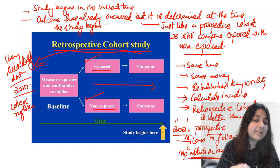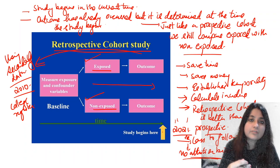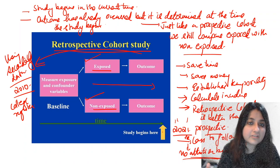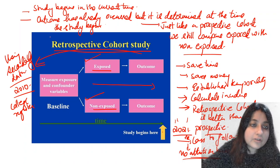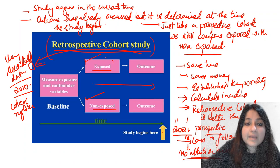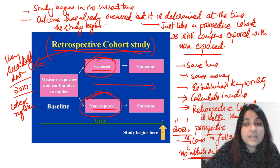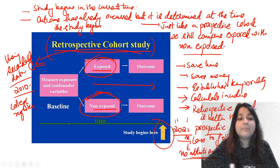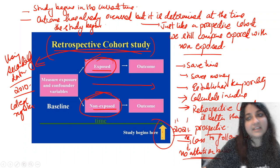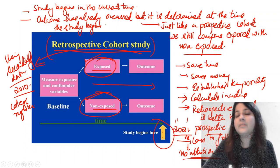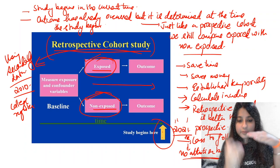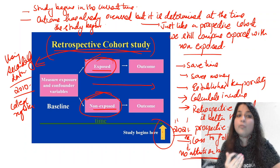You might ask: how do we compare case-control with retrospective cohort? In case-control, you compare cases and controls. In retrospective cohort, you are still comparing exposed and non-exposed. The only difference is you start the study at the present time, go back, divide participants into two groups, and determine the outcome at the time the study begins. Therefore, retrospective cohort is always above prospective cohort in establishing causality.